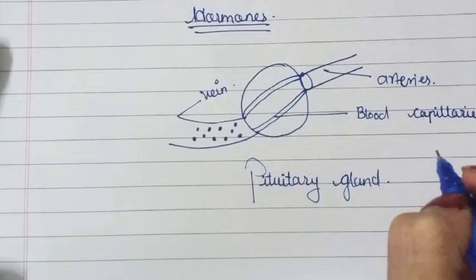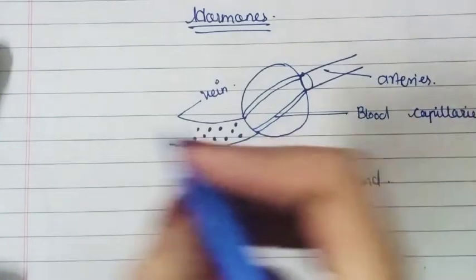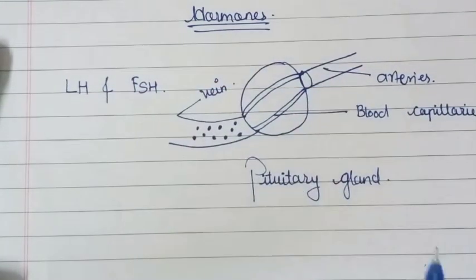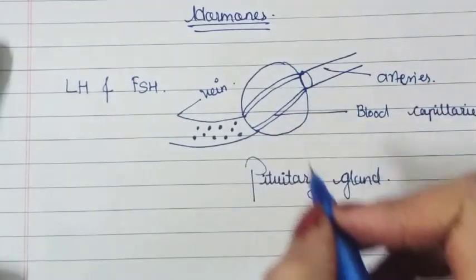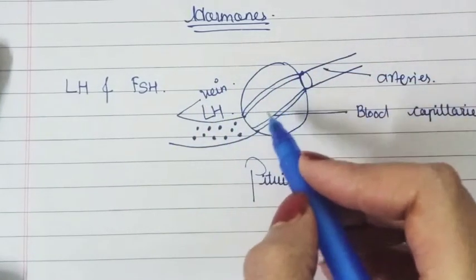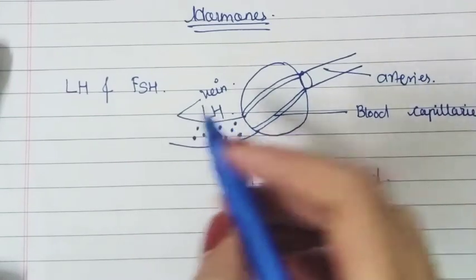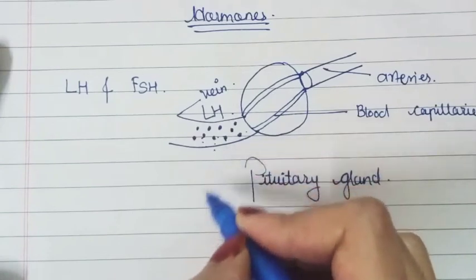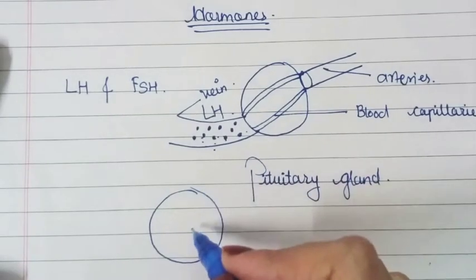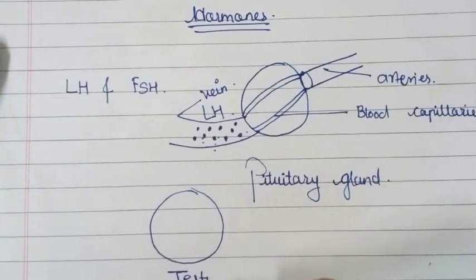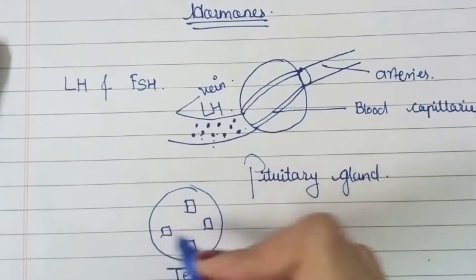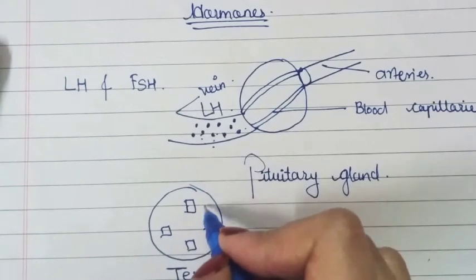The pituitary gland secretes two types of hormones: LH and FSH. LH is a male hormone. The pituitary secretes LH into the blood, and this hormone travels toward the testes. LH acts on the Leydig cells — special cells present inside the testes. If we enlarge the structure of the testes, we find these special Leydig cells inside.